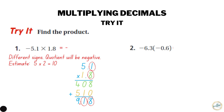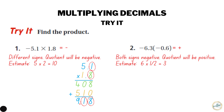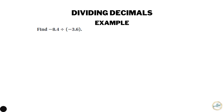Number two: negative 6.3 times negative 0.6. Since both signs are negative, our answer will be positive. Let's estimate: 6.3 is close to 6 and 0.6 is close to one half, so 6 times one half is 3. Multiplying 6.3 by 6: six times three is 18, carry the one; six times six is 36, plus the carried one gives 37. Placing the decimal — two decimal places total — our answer is 3.78. Our estimate was 3, and 3.78 is pretty close.